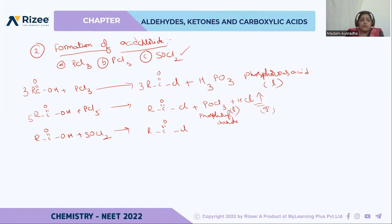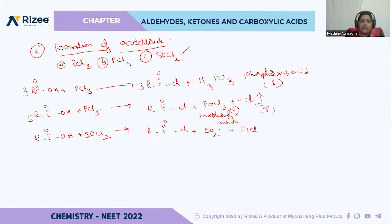When carboxylic acid reacts with thionyl chloride (SOCl2), the byproducts are SO2 and HCl. Both of these are gases.